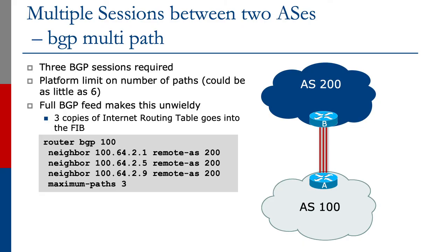The second example I want to look at for handling multiple parallel connections between a local router and a peer's router is BGP multi-path. When this first appeared, it was actually extremely useful — the internet routing table was quite small and this was a good solution to the problem of trying to get enough bandwidth between adjacent networks. In this example, AS100 and AS200 again have three parallel links between router A and router B. What we do in this case is set up three BGP sessions.